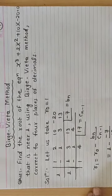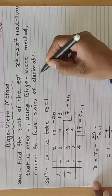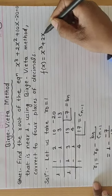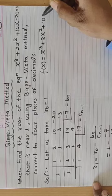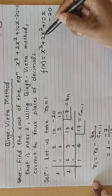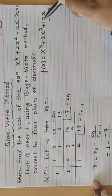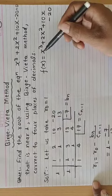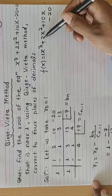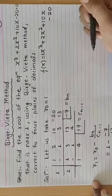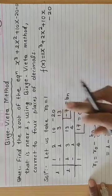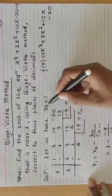Here, we are given the polynomial f(x) = x³ + 2x² + 10x − 20. The coefficients are: for x³ it is 1, for x² it is 2, for x it is 10, and the constant is −20. We write these coefficients first. To start, we take R0 = 1.